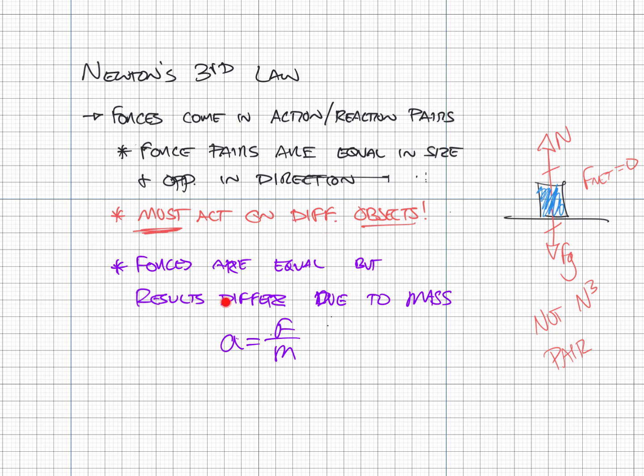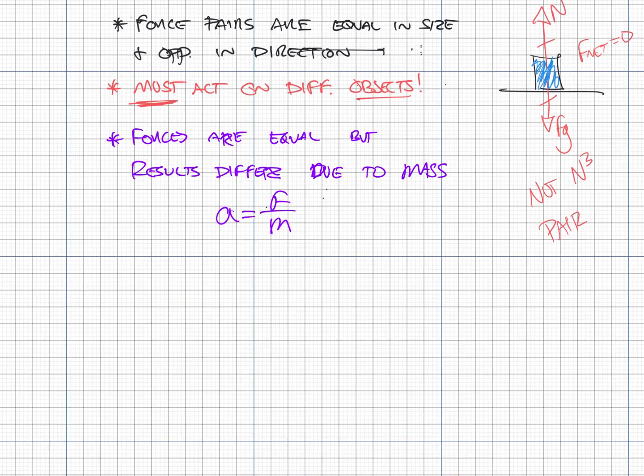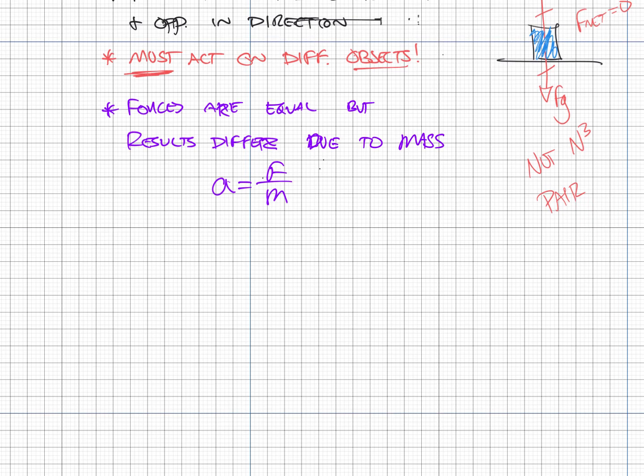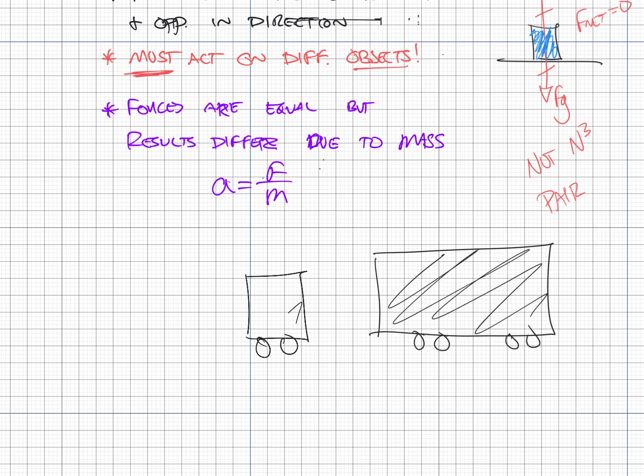Forces are equal in size, but the results differ due to an object's mass. If we have two vehicles driving toward one another, one with smaller mass and one with larger mass, they're going to collide.